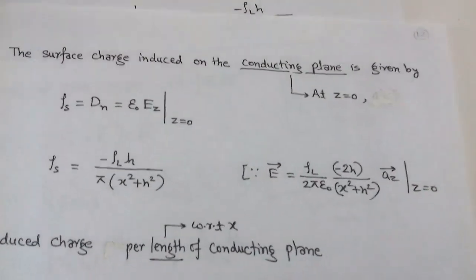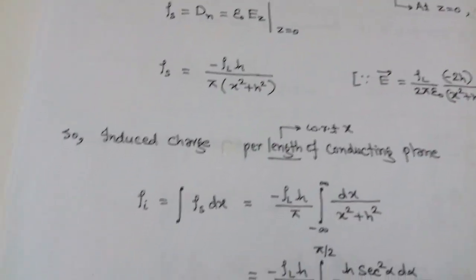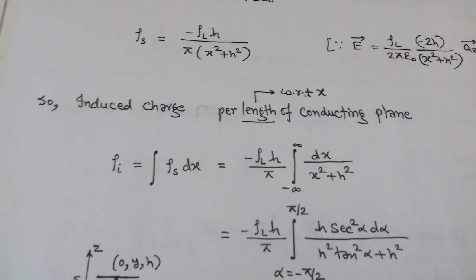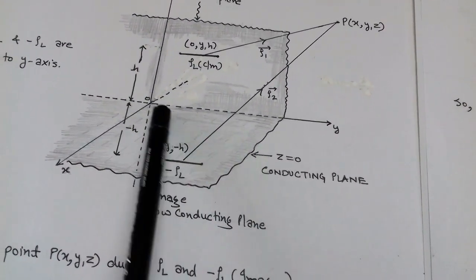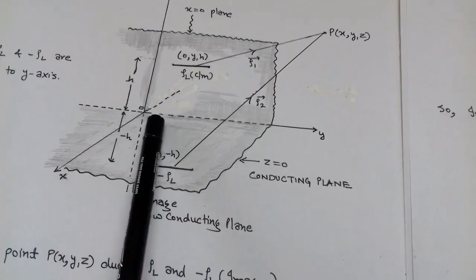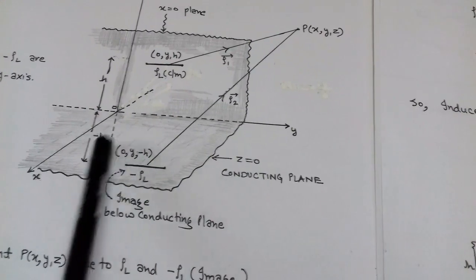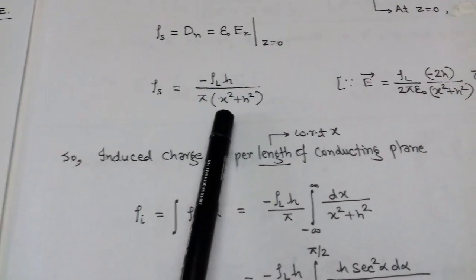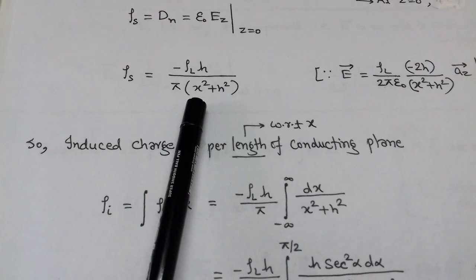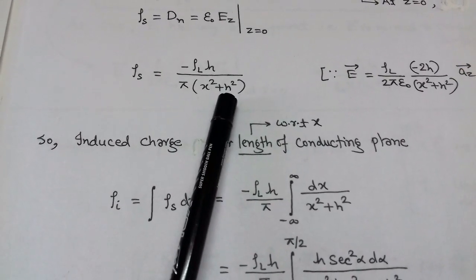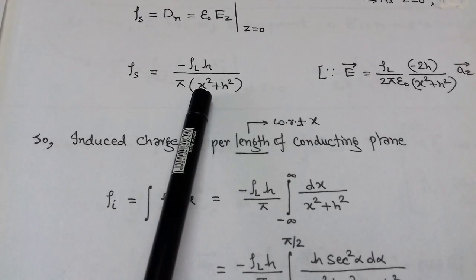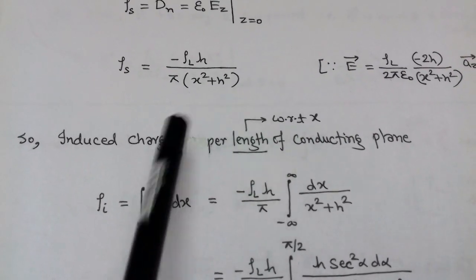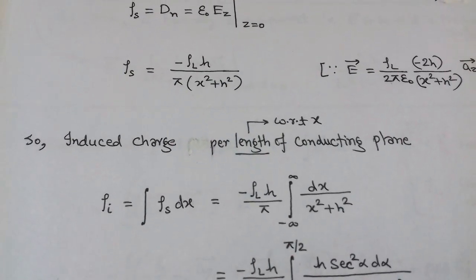Now we determine the induced charge per unit length with respect to the length of the conducting plane. The conducting plane is situated at z equals 0, and from the formula for surface charge density rho_s, we have the term minus rho_l*h upon pi*(x^2 + h^2), where h is the constant height of the line charge density and x is the variable.